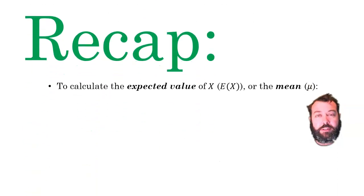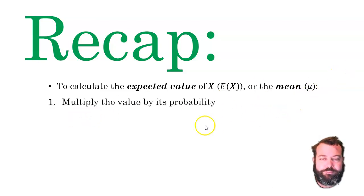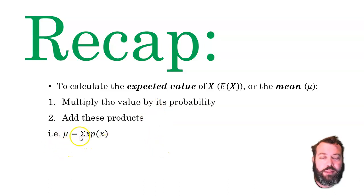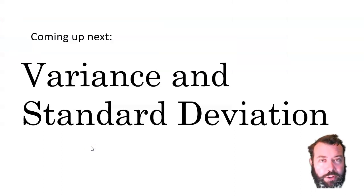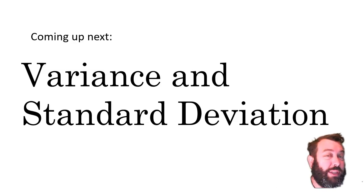That's it for this second exercise. To wrap up: calculate the expected value — also called the mean — by multiplying each value by its probability and then summing those products. So mu equals the sum of the values multiplied by their probabilities. Our next exercise is going to be variance and standard deviation, and that will also be the end of the topic.